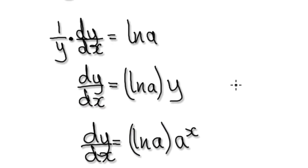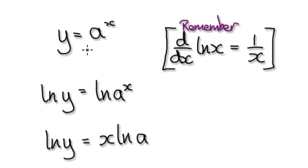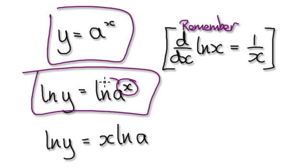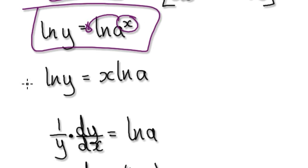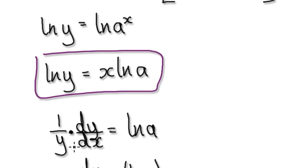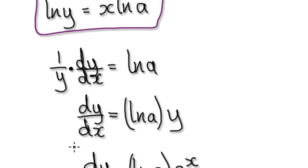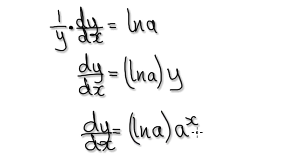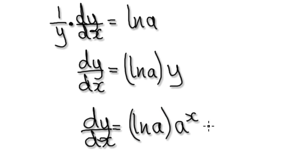Let me run through this again. Take the natural log of both sides, apply the log power rule to bring x out, use implicit differentiation, then multiply both sides by y and substitute y equals a to the power of x back in. Overall, dy/dx equals natural log of a times a to the power of x.